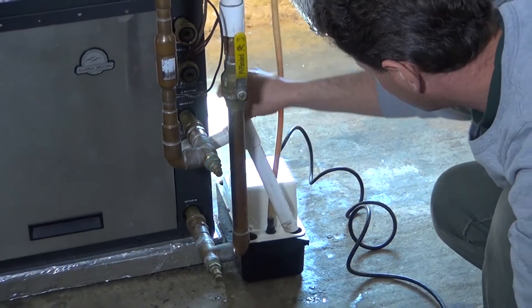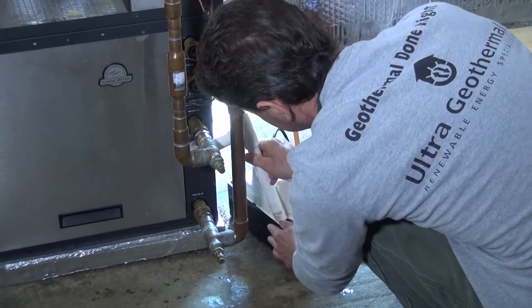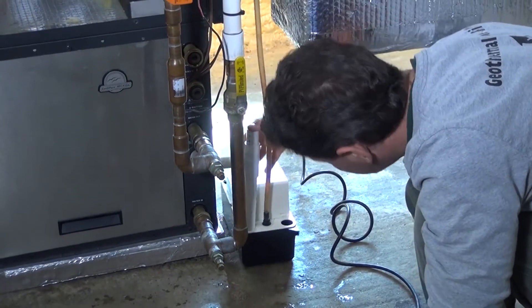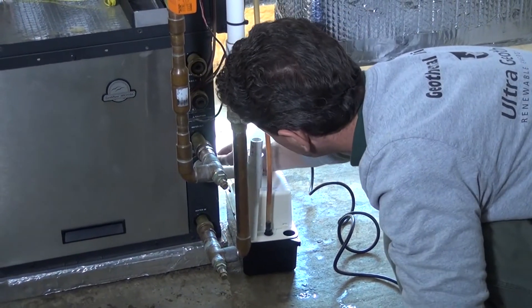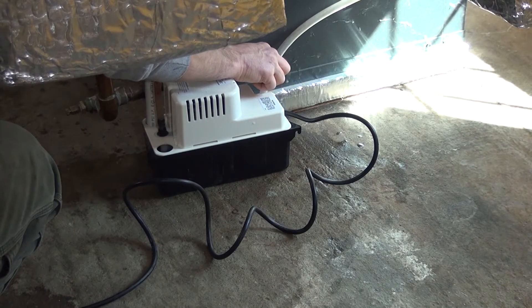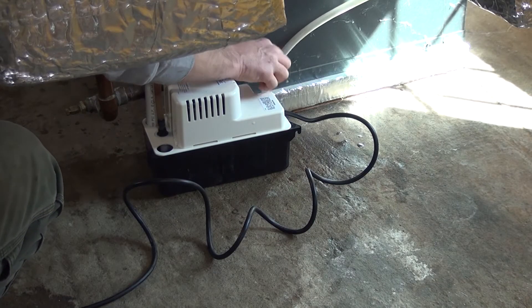Put your drain back in and make sure it's straight with a little pitch to it. Then the drain from the humidifier or whatever else is draining into this pump goes back into the holes.